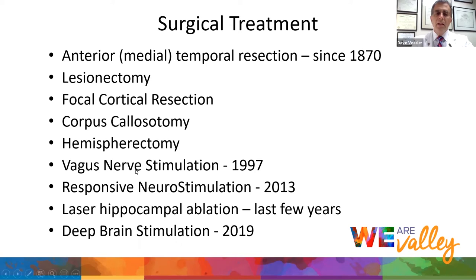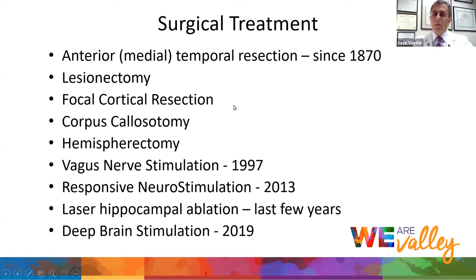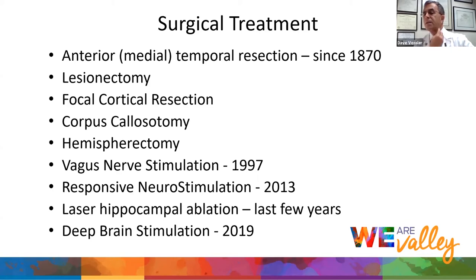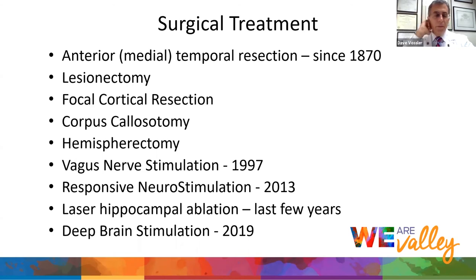Lesionectomy means taking out a lesion — a brain tumor or blood vessel tangle — and we do those things here at Valley Medical Center. We can also remove a part of the cortex that's electrically bad even if nothing is physically wrong with it. I want to talk about the newer approaches: vagus nerve stimulation, a pacemaker-like device put in the left upper chest with a wire attaching to the vagus nerve, sending signals intermittently to the brain to dampen down seizures. It doesn't go directly into the brain — it's just on a nerve that goes to the brain.